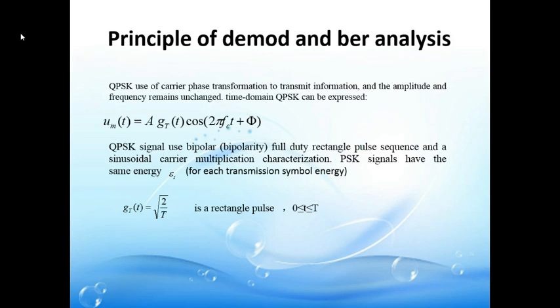The QPSK signal uses a bipolar rectangular pulse sequence and a sinusoidal carrier multiplication in quadrature position. PSK signals have the same energy for each transmission symbol. The second equation defines the rectangular pulse, where the function equals one for 0 ≤ t ≤ T and zero otherwise.